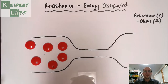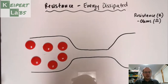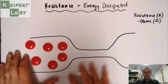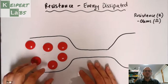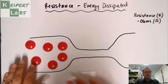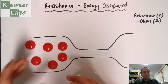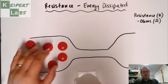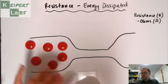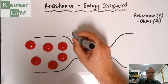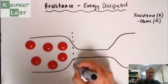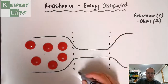We're going to be discussing resistance as energy that dissipates in an electric circuit. What I have here is a really simplified diagram of a particular point in an electric circuit that we would call a resistor.